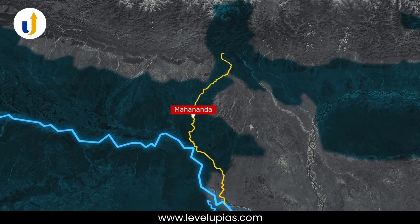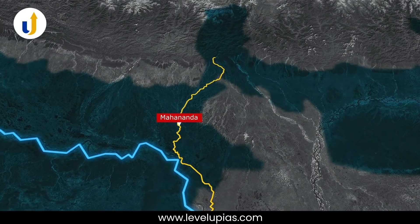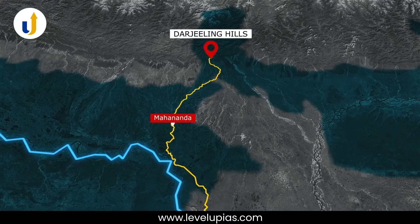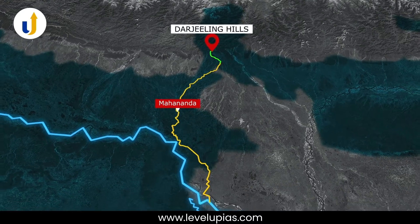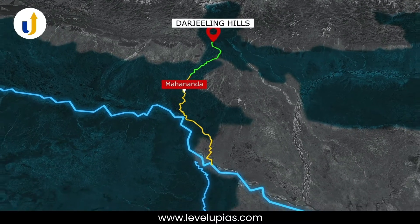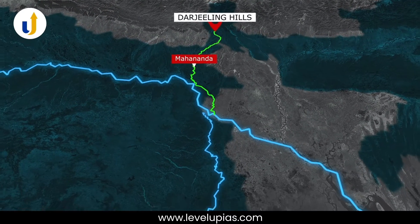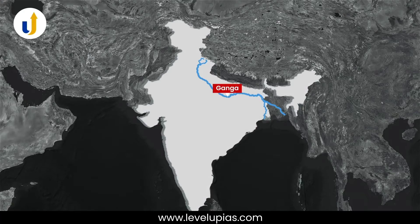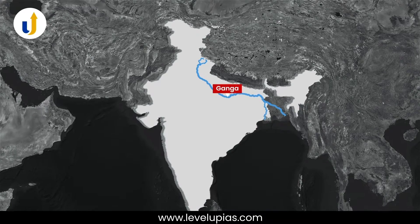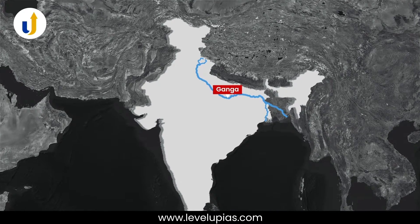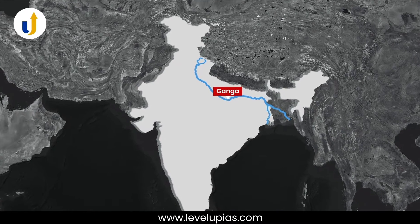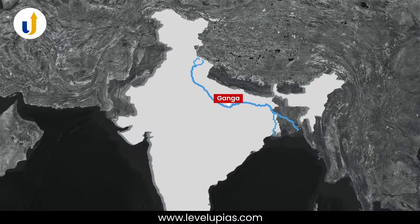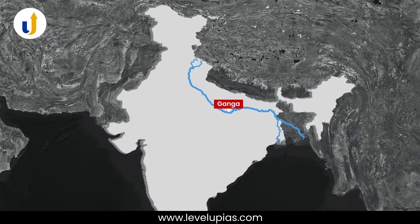The Mahananda is another important tributary of the Ganga, rising in the Darjeeling hills. It joins the Ganga as its last left bank tributary in West Bengal. In the next video, we will talk about the right bank tributaries of River Ganga.